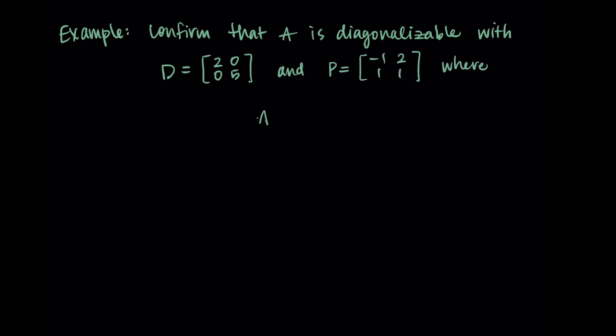We're starting with the matrix A, which is equal to [4, 2; 1, 3]. We're going to confirm that A can be diagonalized with these two matrices, and then we're also going to find A to the fifth power using our diagonalization.